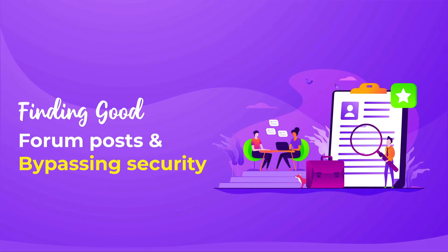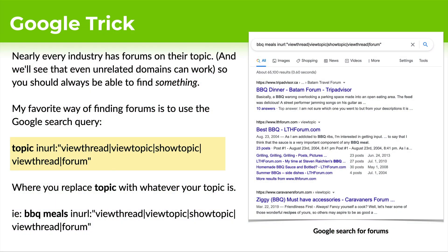Now let's talk about finding forum posts and bypassing security. How do you find good forums? One way is just using Google — there are search operators you can use. You type your topic and put 'inURL' to isolate forums by looking for forum footprints. For example: 'barbecue meals inURL:viewthread OR viewtopic OR showtopic OR forum' — this will list a whole bunch of forums because it's only forums that usually have this type of URL structure. I'll put this in the description so you can copy and paste.